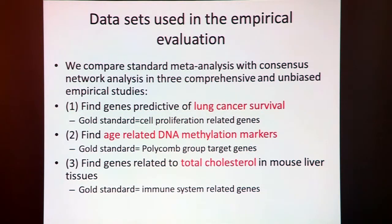We evaluated three different applications in real data sets. The first one was to find genes that are predictive of lung cancer survival. Here we used as gold standard cell proliferation related genes, because people know that if your cancer proliferates and grows, then your prognosis is worse off.